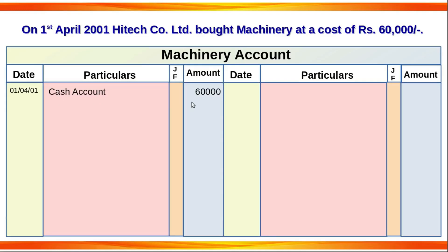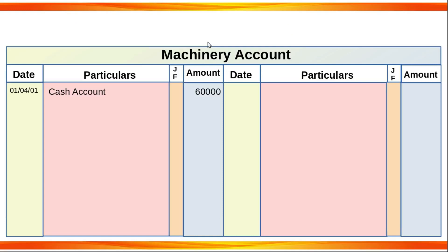The machinery is an asset account. An asset account is debited when purchased and credited when disposed. The machinery account is debited on purchase and credited on sale or disposal.